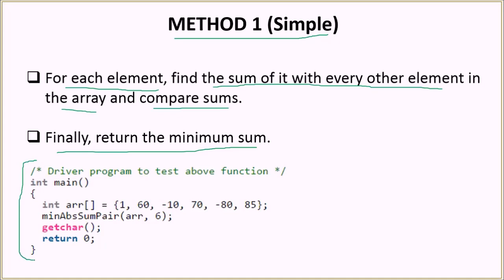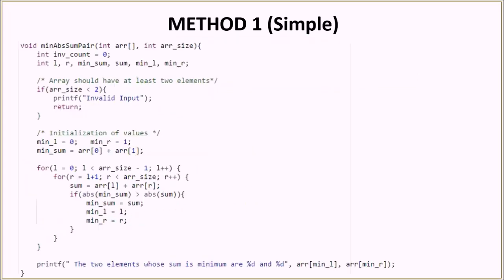Here we have the driver function where we have the array with elements 160, minus 10, 70, minus 80 and 85. This is the same array which we have discussed. Then we call the function min absolute sum pair, passing the array and its size. Note that this array has 6 elements in it, so that is why we are passing the value 6. Let's dive into this function to see the algorithm. In this function we firstly have some initializations, then we have the check to see if the array size is smaller than 2.